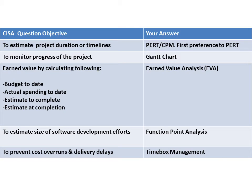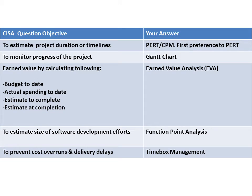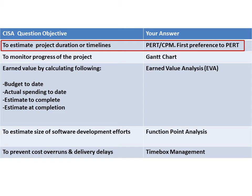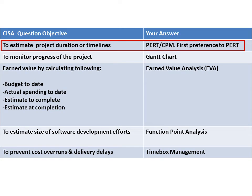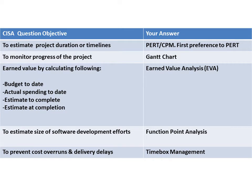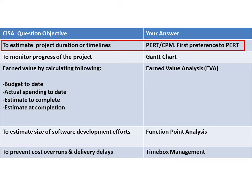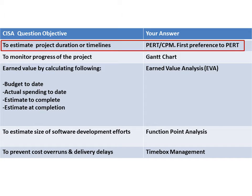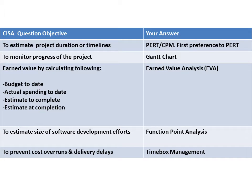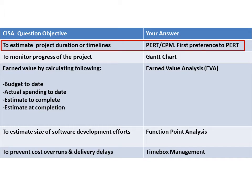Let us understand exam question objectives and our answers for the same. When our objective is to estimate project duration or timelines, our answer should be PERT or CPM. First preference should be given to PERT.